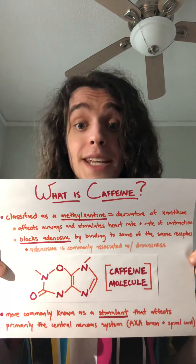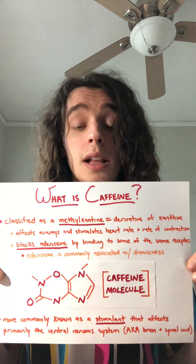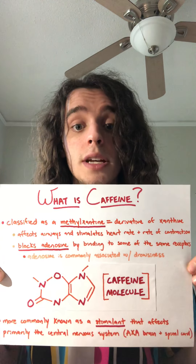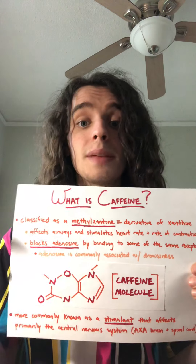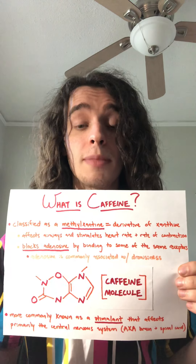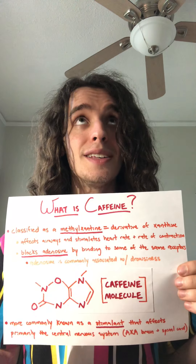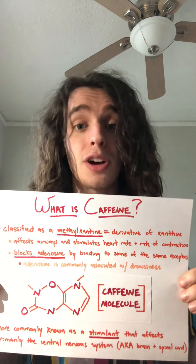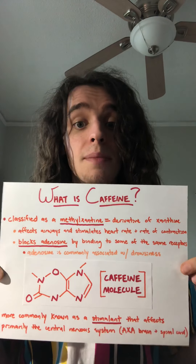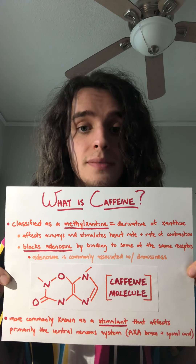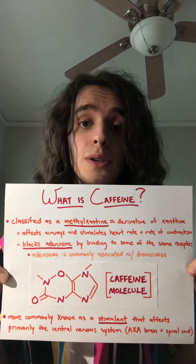Enough procrastinating, let's get into the topic. What exactly is caffeine? So caffeine is classified as a methylxanthine, which is a derivative of xanthine, which is a purine base. Something I should mention is that I am by no means a chemist — the last time I took chemistry was sophomore year of high school. So I don't know a lot of the super in-depth stuff, but this is about as in-depth as I've gotten. Please forgive me if this information seems pretty shallow.